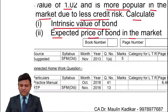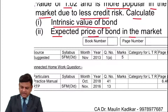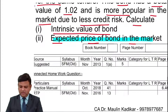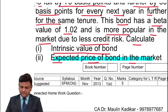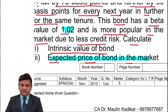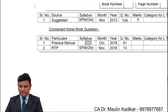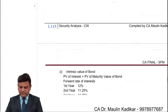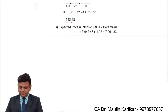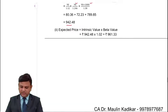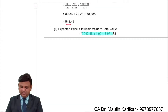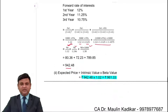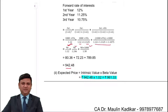The second part of the question asks us to calculate the expected market price of the bond. Beta of 1.02 is used here. The expected market price is calculated as intrinsic value multiplied by beta, which gives 961.33.